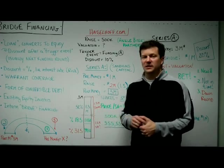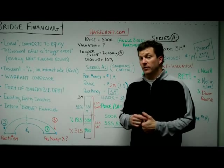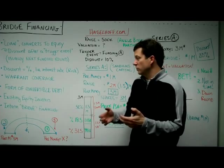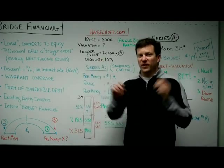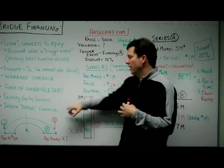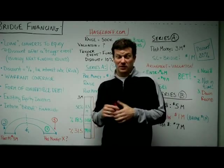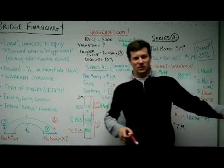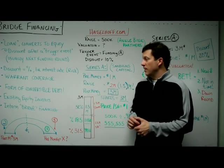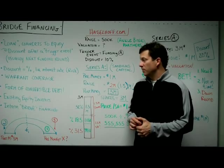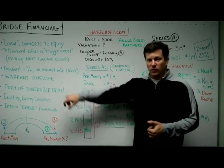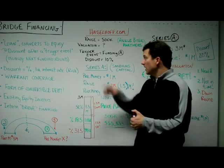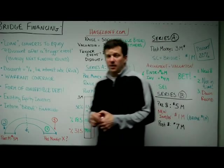The investors give you a little bit of money right now as a loan, and you wait until a funding event happens in the future, at which point it will convert into equity in that funding round. It sounds like a good thing because your current investors are doing an interim 'bridge' financing to get you from one place to another. But it can be a bad thing — it can work out terribly for the entrepreneur. It's a form of convertible debt, so if you don't know what that is, watch our video on convertible debt.